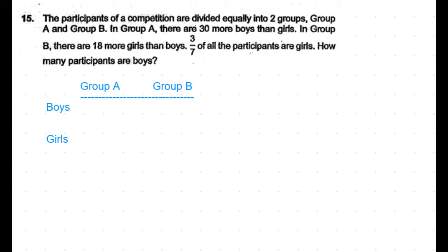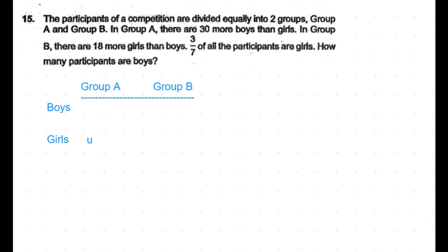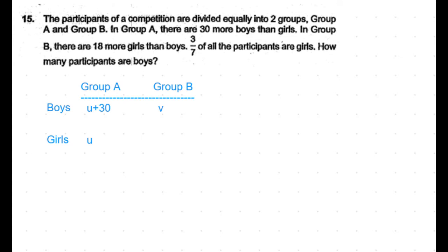Let's first chart down Group A versus Group B, and boys versus girls. In Group A there are 30 more boys than girls, so let's take the number of girls as u, so the number of boys in Group A is u + 30. In Group B there are 18 more girls than boys, so let's take the number of boys in Group B as v, and the number of girls becomes v + 18. So the total number of participants in Group A is 2u + 30.